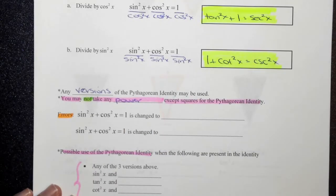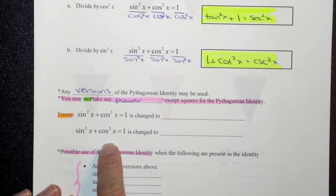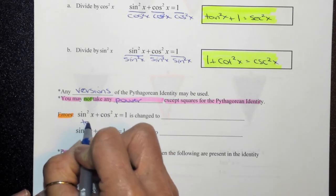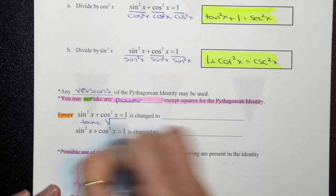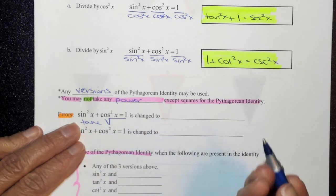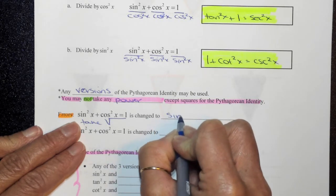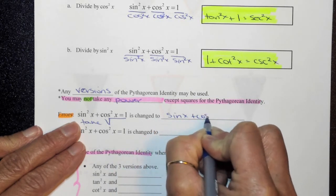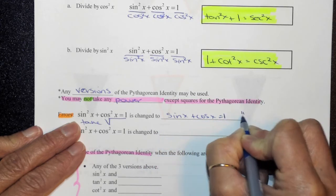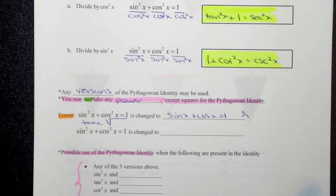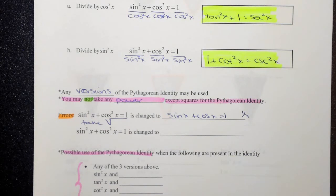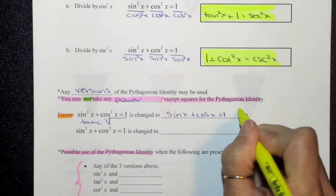So common errors that are made, which means do not do this, is if you take the square root of the whole thing. This is a bad thing because that's not even a valid mathematical operation. So this would be then changed to sine plus cosine is equal to 1, and this is not good. This is bad. So don't do this. Okay, so this is incorrect.